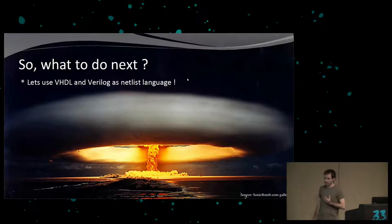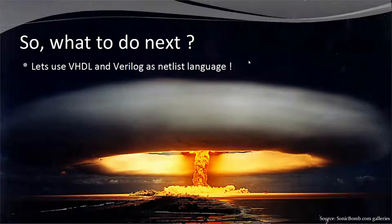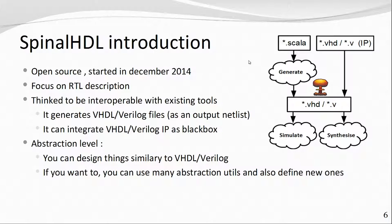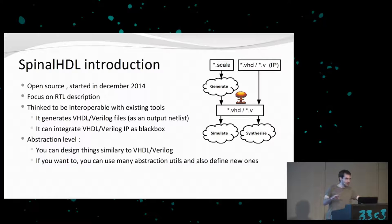One solution is to use VHDL as a netlist language, which is automatically generated from a higher-level language. And there I go with SpinalHDL. Basically, it is an open source project that I started in December 2014. It's focused exclusively on RTL description — the idea is to make no compromise and have the best possible language for one precise thing: describing RTL. Since the beginning, it was designed to be interoperable with existing tools, because you can't go to a company and ask them to support a brand-new language. The SpinalHDL compiler can generate its output netlist as Verilog or VHDL. You can also integrate legacy IPs inside the SpinalHDL hierarchy using a black-boxing system, a bit like having a C header file.